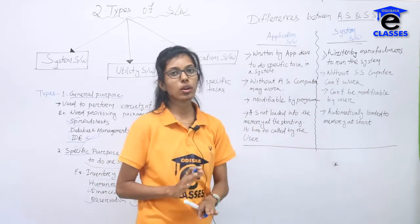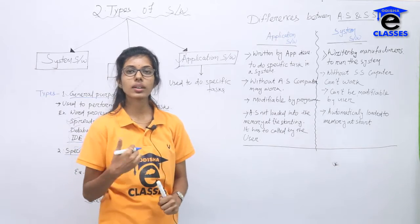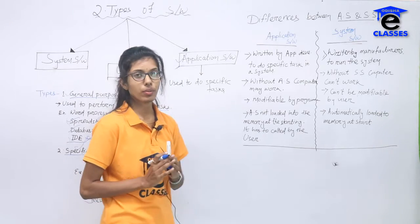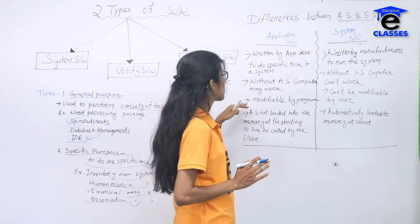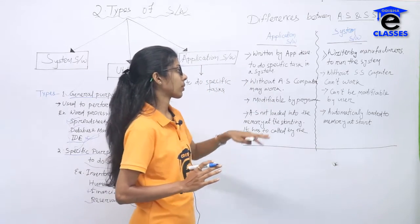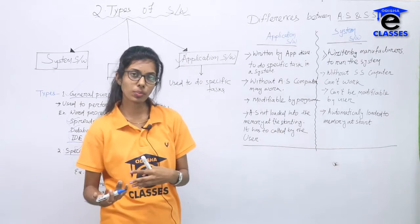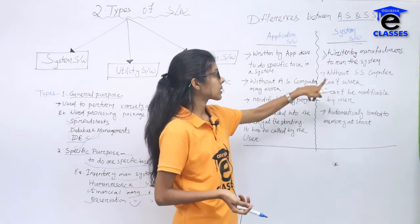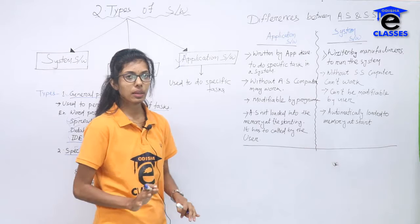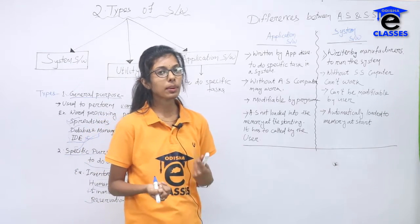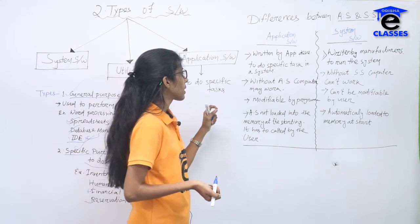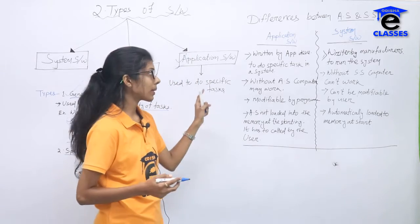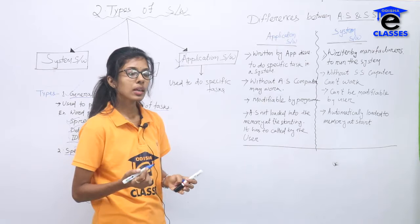Without system software the computer cannot work because it is needed to interact with users, hardware, and software. Application software can be modified by a programmer, but system software cannot be modified by the user — you need appropriate manufacturer permission to modify system software. Also, application software is not loaded when the computer starts.